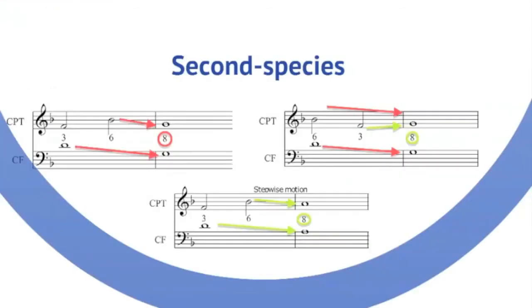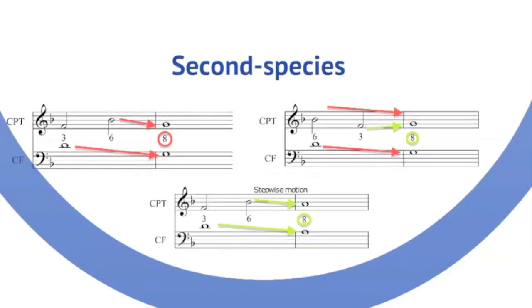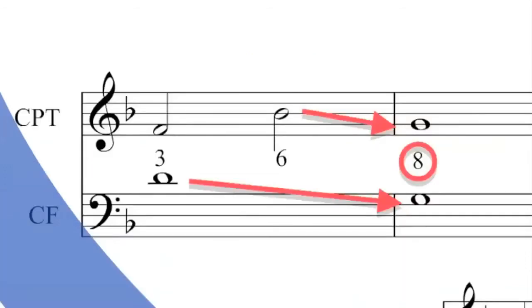In second species as you might imagine there are a few more scenarios again to consider. We have to think of first from a weak beat to a strong beat, so directly across a bar line. And that's pretty straightforward.